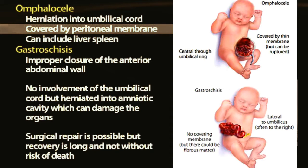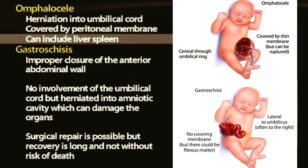The worse the developmental closure failure is, the more organs that can be in this space, which can include liver and spleen. The regular bowel herniation occurs at about 1 in 5,000, but the more rare form involving liver and other organs being enclosed is much rarer at 1 in 10,000.